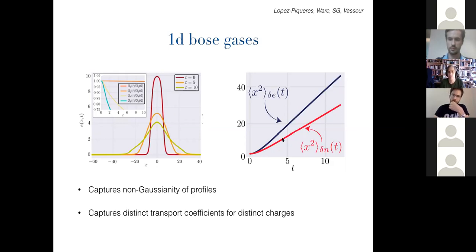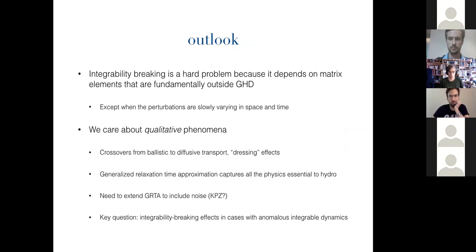And one final comment is that even though the relaxation time itself might be universal in this approximation, the diffusion constants are still, they still form a non-trivial matrix. Once again, because diffusion constant has to do with velocity squared times time and the velocities and dressed charges obviously are different for different charges. And so you can still get non-trivial diffusion matrix in the generalized RTA. All right. So that's about it, this talk.